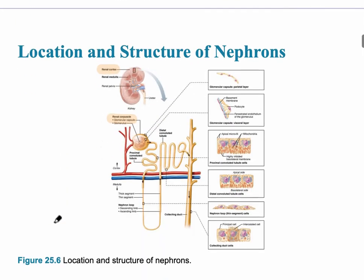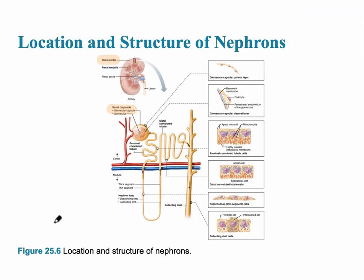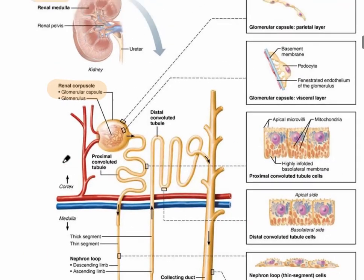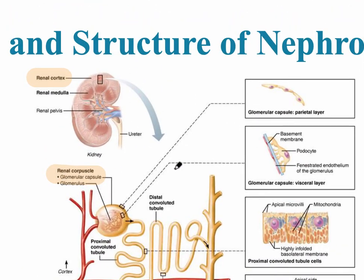The next slide shows the location and structure of the nephrons. The first part of the nephron is the renal corpuscle, and it's located in the outer renal cortex of the kidney.